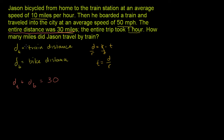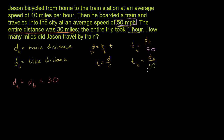So let's think about each situation. The time by train is going to be equal to the distance by train divided by the rate the train was going. They told us the train traveled at an average speed of 50 miles per hour, so the time by train equals dt divided by 50. Similarly, the time by bicycle equals the distance by bicycle divided by 10 miles per hour. Everything in this problem is in miles or hours, so there's no major unit conversion needed.